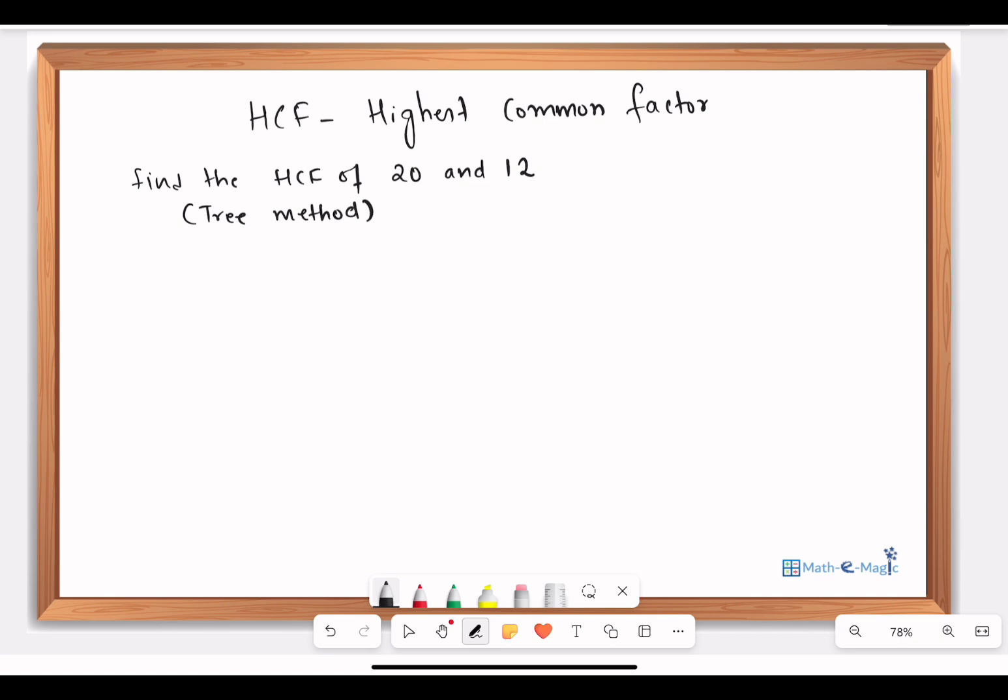Let us go ahead and find out the HCF of 20 and 12. In order to find the HCF, first we need to prime factorize 20 and 12. We will do that using this tree method. I am going to find out the prime factors of 20.